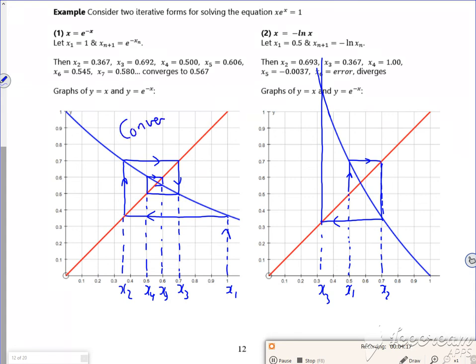So this one converged. This one diverges. Because the next one would be all the way over here somewhere, wouldn't it? And then the next one's down there somewhere. There. So there's another example there.